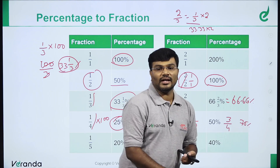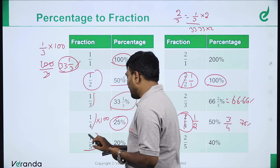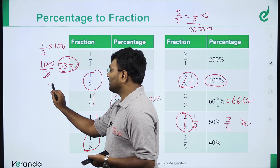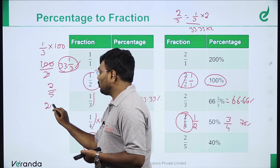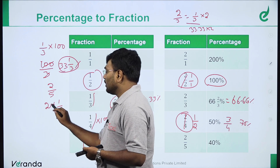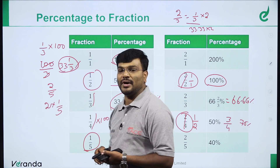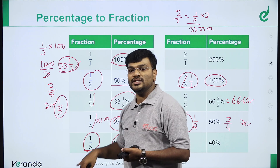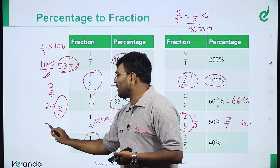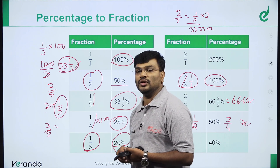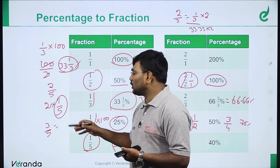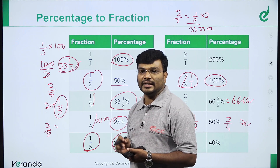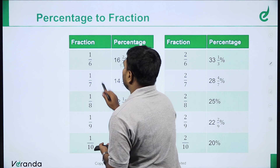1 by 5 equals 20%. 2 by 5: two into 1 by 5, two into 20% gives 40%. 3 by 5: three into 20% gives 60%. 4 by 5: four into 20% gives 80%.